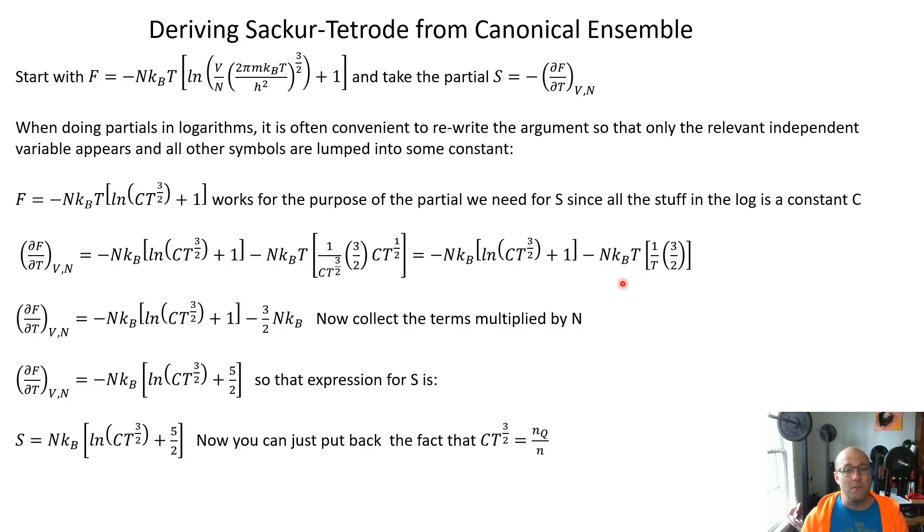By the way, you almost knew that had to happen based on units, right? Entropy has to have units that are the same as kB. And so if you're multiplying through by a T, you have a unit problem and that better go away. All right, so keep going. Cancel the T's. Like we said, we've got minus NkB ln of all this plus one minus three halves NkB. And let's collect the terms that are all multiplied by N. So we get minus NkB natural log of this stuff plus five halves. That's a five halves that should look familiar to you. And so this is an expression that is exactly Sackur-Tetrode. We just have to remember that up at the tippy top, we define C times T to the three halves to already be nQ over n. So that's a re-derivation of Sackur-Tetrode from Helmholtz free energy.